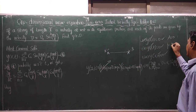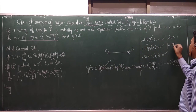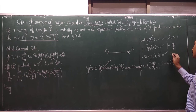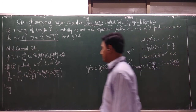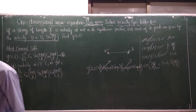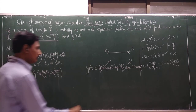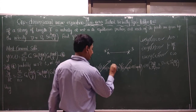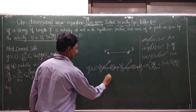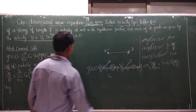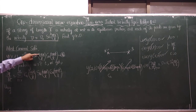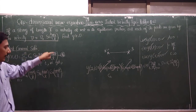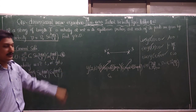Applying the third boundary condition gives C equal to zero. So we have A = 0, C = 0, and p = nπ/L. Combining the arbitrary constants B and D into Cₙ, the most general solution is y = Σ(n=1 to ∞) Cₙ sin(nπx/L) sin(nπat/L). This is our star equation.